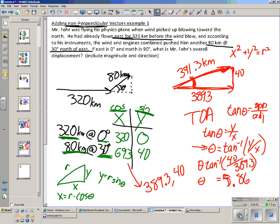So my resultant, which once again I've kind of run out of room here, I'll mark it in blue. My resultant is going to be 391 kilometers at 5.9 degrees north of east.